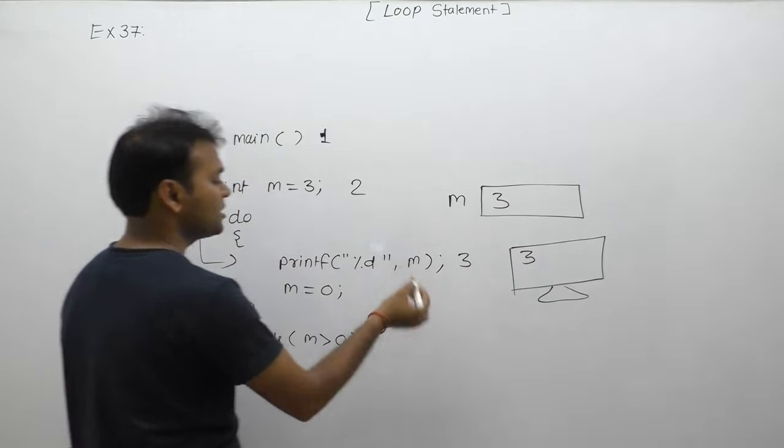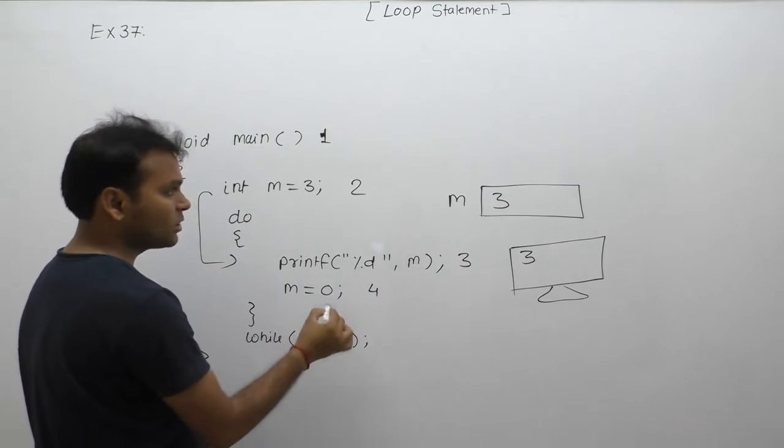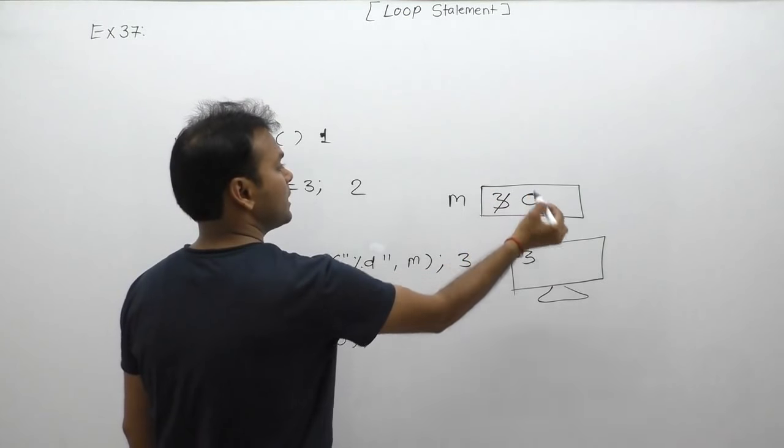Next sequence, the third statement: m equals 0. Now m is assigned 0. The value 3 is replaced by 0, so m's current value is now 0.